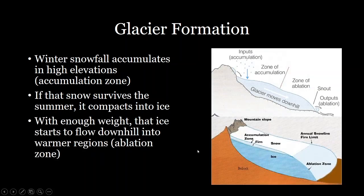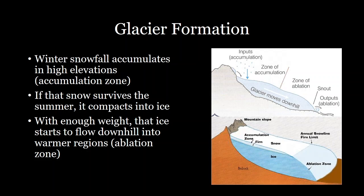As you build up more and more of that snow, the weight of the glacier starts to build and you get flow — enough weight to actually push the glacier downhill. The snow that accumulates higher up on the mountainside starts to flow into an area where there's less accumulation, which we call the ablation zone. So there are two zones: the accumulation zone, where there is net accumulation of snow, and the ablation zone, where the glacier flows and there is net melting.